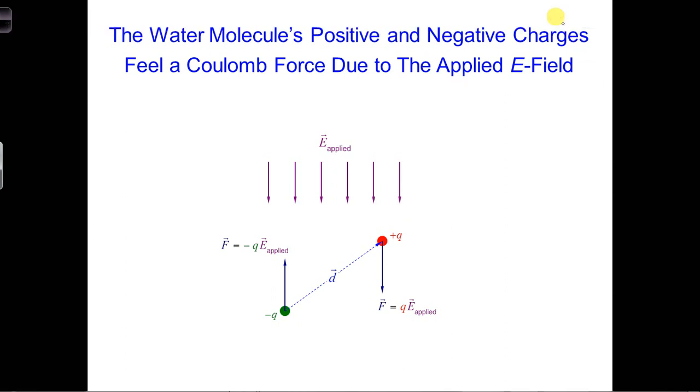The water molecule has what is called a permanent dipole moment. That is, it's already polarized and bound together. But from Coulomb's Law, we know that each charge in the water molecule, or charge region, will feel a Coulomb force due to E applied. So the negative region will feel a Coulomb force in the upward direction, and the positive charge region will feel a Coulomb force in the downward direction.